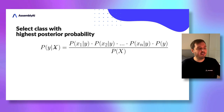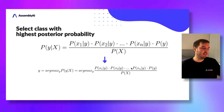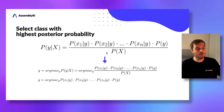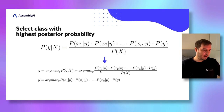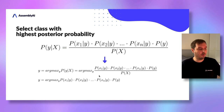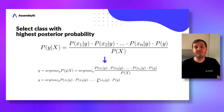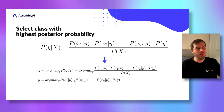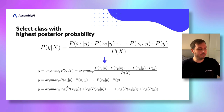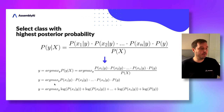We want to select y as the argmax of the posterior. We can simplify this by getting rid of P(x), since it doesn't depend on y at all. We also apply a useful trick: since all these probabilities are values between zero and one, multiplying them together can produce very small numbers and lead to numerical inaccuracies. So instead of taking a product, we apply the logarithm, which lets us convert the product into a sum. This gives us the final formula for y.